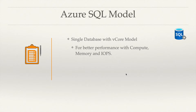vCores are basically a combination of compute, memory, and IOPS operations. For example, a given number of vCores might be equivalent to eight CPU cores, a certain amount of memory, and 5,000 IOPS per second — those are just hypothetical numbers. The exact figures you can find on the Azure portal or documentation website. Based on the type of requirement you have for your application's performance, you can choose a specific vCore configuration for your standalone database.